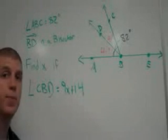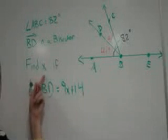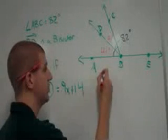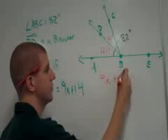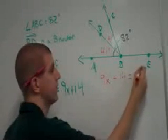We also know that it equals 9x plus 14. So, to write an equation to help us find x, the goal of our problem, we're going to set those two things equal to each other. 9x plus 14 equals 41.